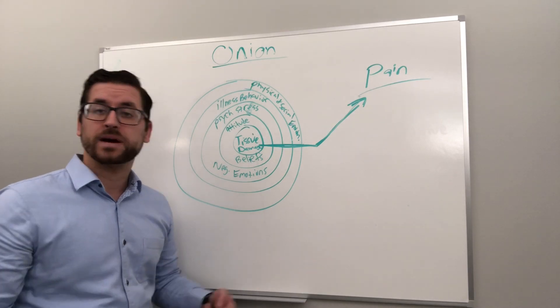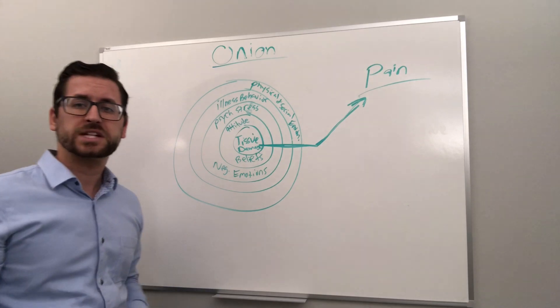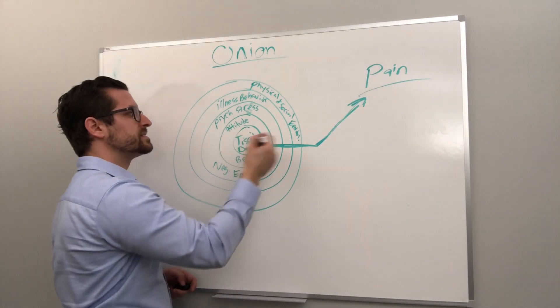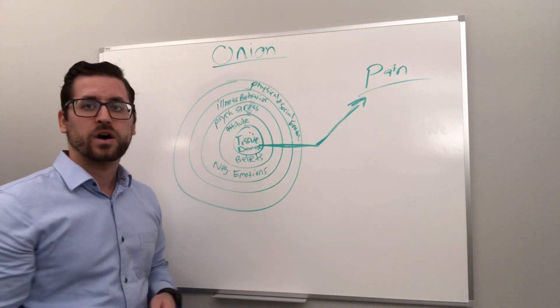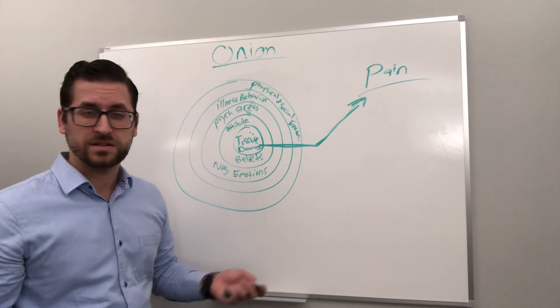And as you may remember with the biomedical model, tissue damage causes pain. With the biopsychosocial model, again at the core is tissue damage. However, all these concentric layers of the onion are all factors that play into how and why you may manifest pain in any certain regard.